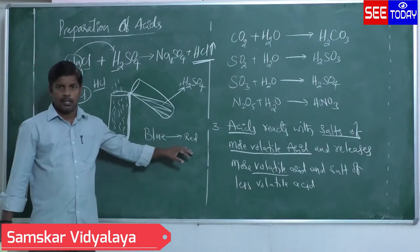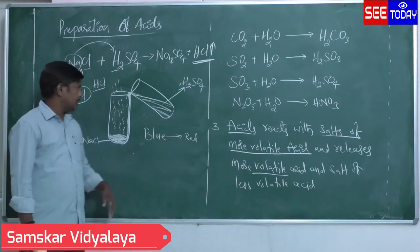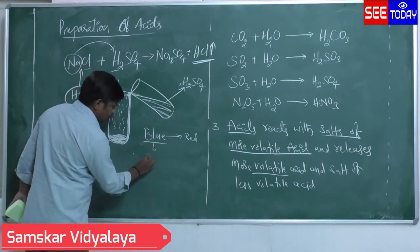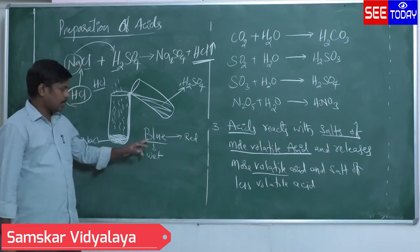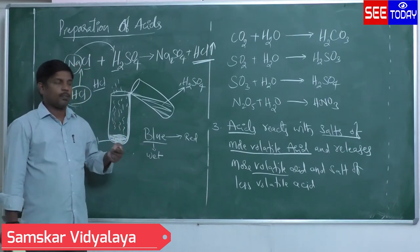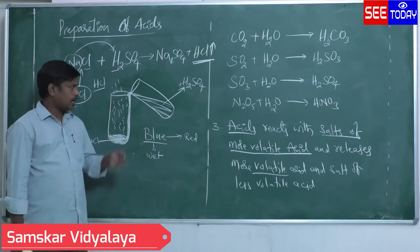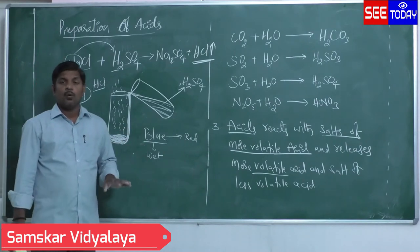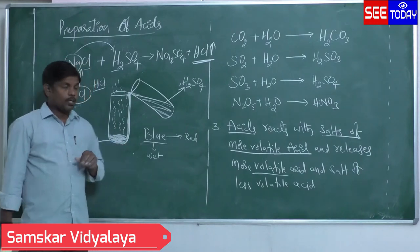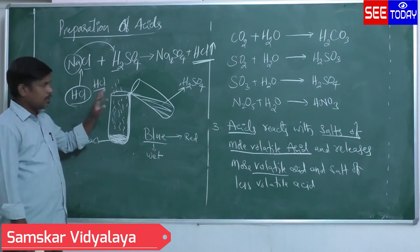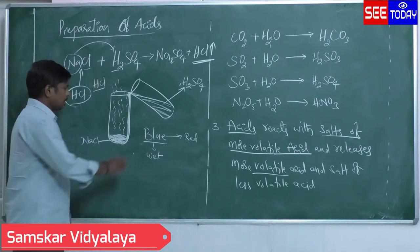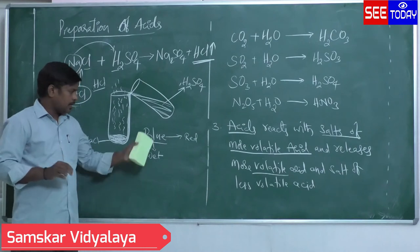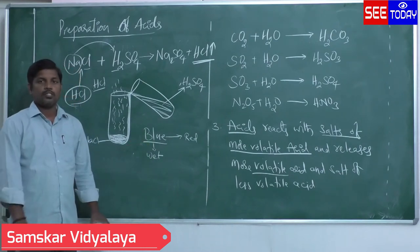The blue litmus paper must be in wet condition. If you take dry blue litmus paper, its colour will not change. It changes colour only with wet blue litmus paper. This is because HCl is produced in molecular form — each HCl molecule comes out as a molecule, not as ions. Blue litmus is turned red by hydrogen ions, but here there is no hydrogen ion; it is in the form of HCl, which is neutral.